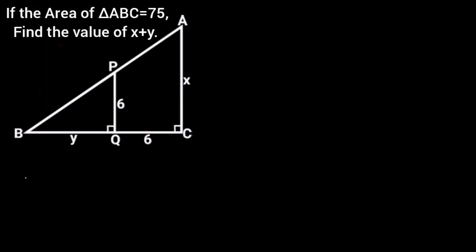In this figure, the area of triangle ABC is 75 square units. PQ and AC are perpendicular to BC. If BQ is equal to Y, PQ is equal to 6, QC is equal to 6, and AC is equal to X, find the value of X plus Y.